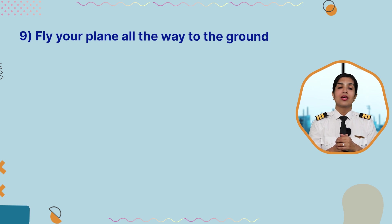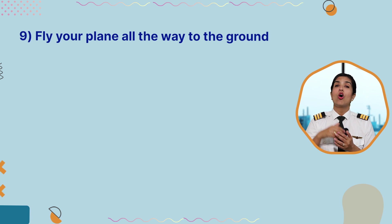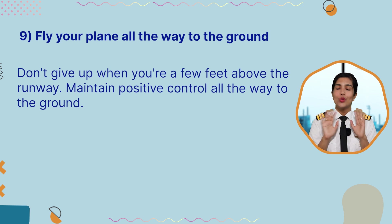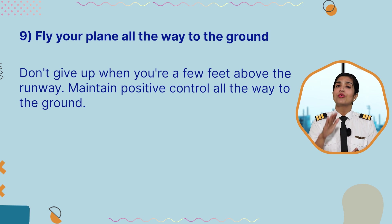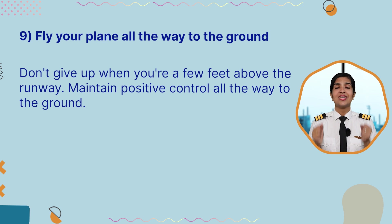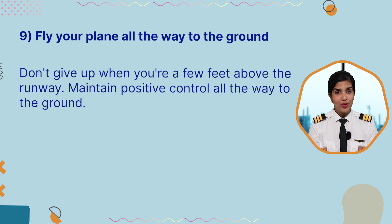Point number nine is to fly your airplane all the way to the ground. Don't give up when you're a few feet above the runway — maintain positive control all the way until you touch the ground.